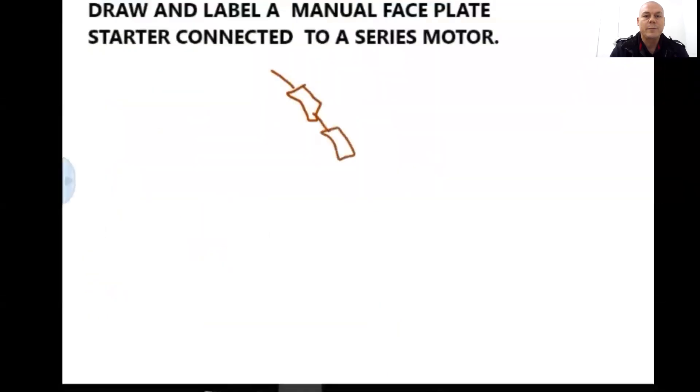Now the next diagram we'll be looking at a faceplate starter connected to a series motor and the first main component we draw here are three resistors connected in series. At the moment of start, the resistors are connected in series to the armature.